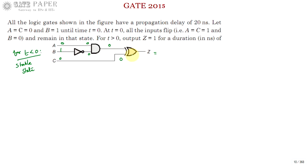Whenever both the inputs of a two-input XOR gate are the same, the output is 0. If both inputs are dissimilar, you will get output 1. So with 0, 0 as inputs, the XOR gate output is 0. This is the XOR gate, and this is the AND gate — output will be 0.